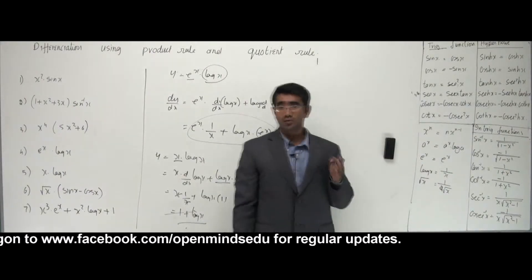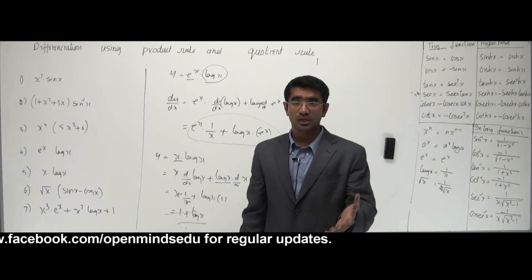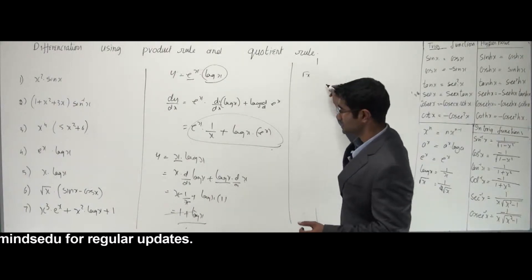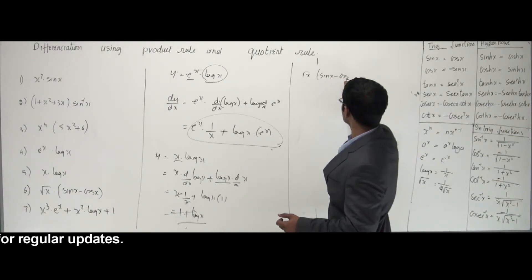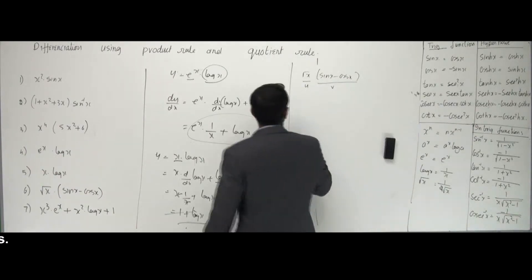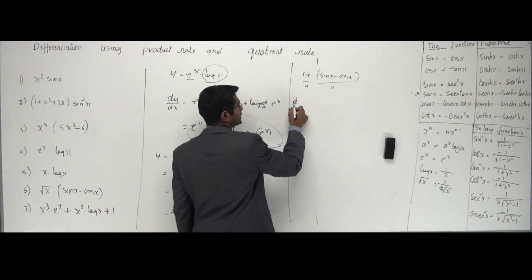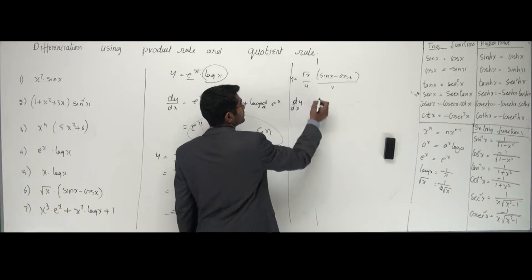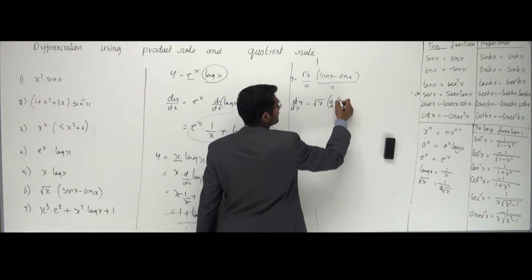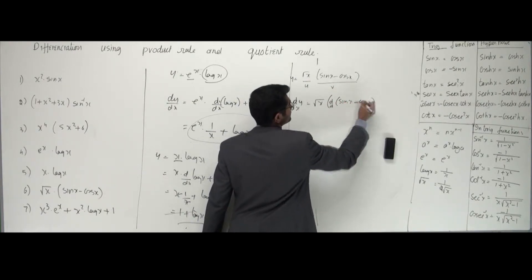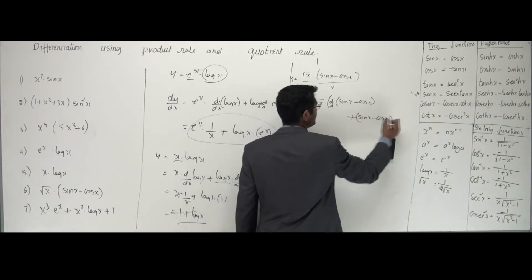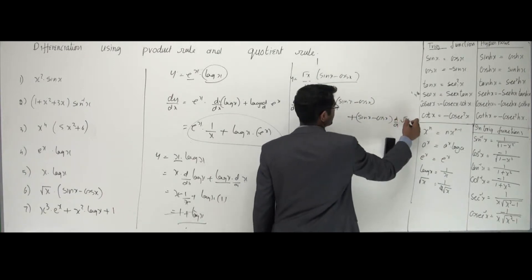Take more problems from your textbooks and try to work them. Next one: y = √x · (sin x - cos x). I'll take √x as the first function and (sin x - cos x) as the second — two functions. So dy/dx: keep the first function √x and differentiate the second, plus write the second function (sin x - cos x) and differentiate the first, which is √x.